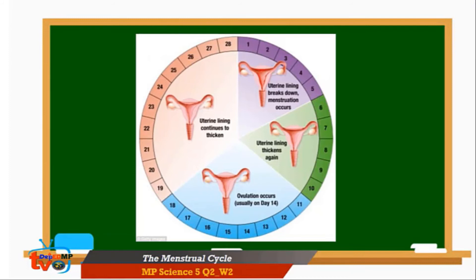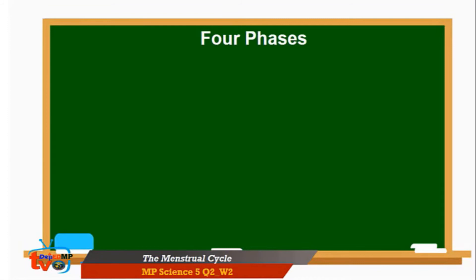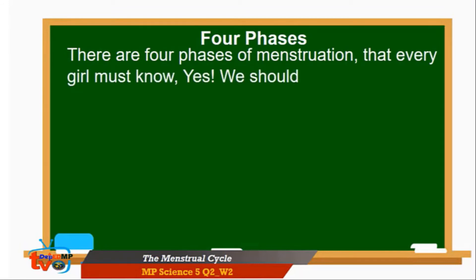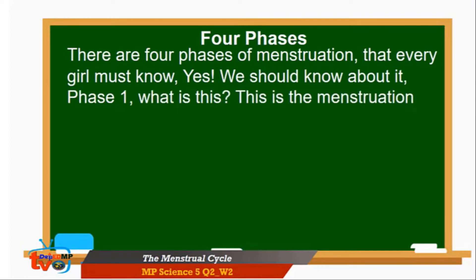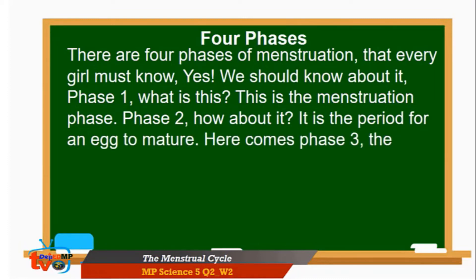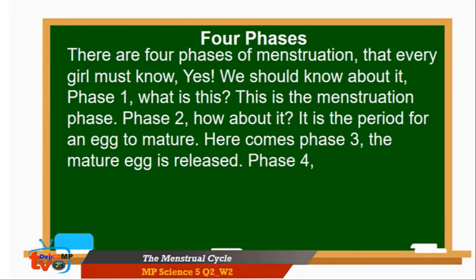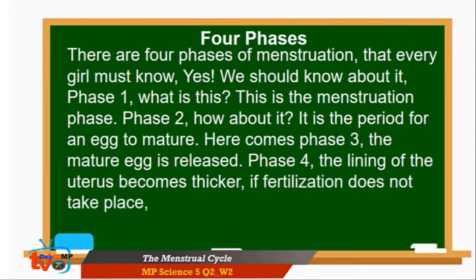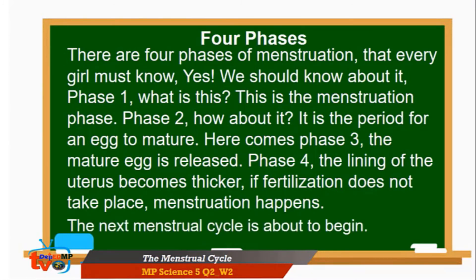Again, let us name the 4 phases of the menstrual cycle. There are 4 phases of menstruation that every girl must know. Phase 1 is the menstruation phase. Phase 2 is the period for an egg to mature. Phase 3 is when the mature egg is released. Phase 4 is when the lining of the uterus becomes thicker. If fertilization does not take place, menstruation happens and the next menstrual cycle is about to begin.